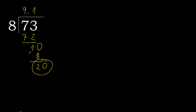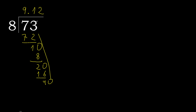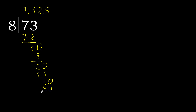Point 20. 8 multiplied by 3 is greater, multiplied by 2 is 16. Subtract, complete. Point 40. 8 multiplied by 5 is 40. Subtract. Remainder 0.